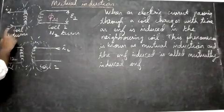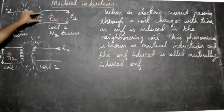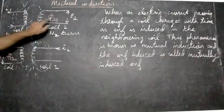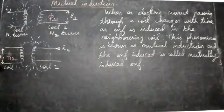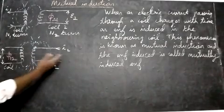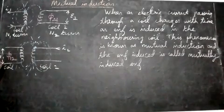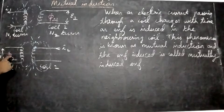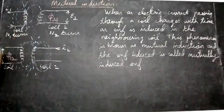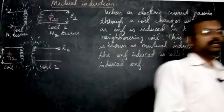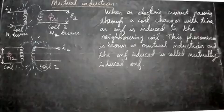Coil one has N1 turns and coil two has N2 turns. When we pass current through coil one, the magnetic field increases and links with the second coil. The magnetic flux on coil two due to coil one is Φ21, and the EMF induced is E2. Similarly, if we send current I2 from right to left through coil two, an EMF E1 is induced in coil one, with flux linkage Φ12. This is called mutual induction.